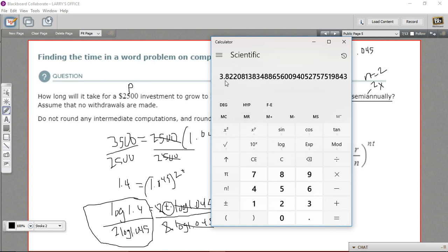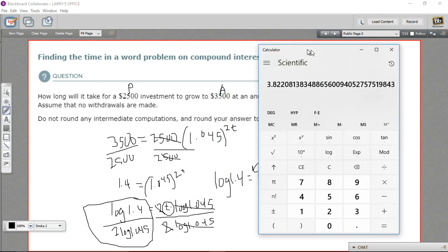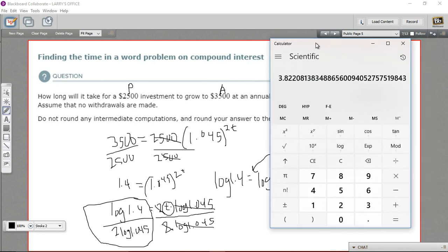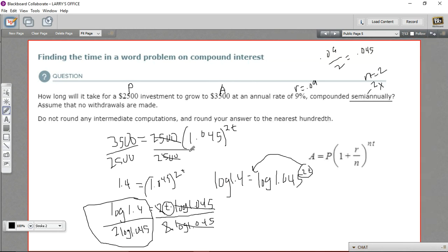And we get 3.822. Let's see, we wanted to round to the nearest hundredth, so that's 3.82. And this is t, this is the number of years it's going to take. So 3.82 years to have our $2500 grow to $3500 at a nine percent rate compounded twice a year. So that is how to solve a word problem involving compound interest.